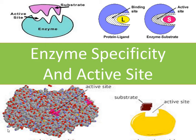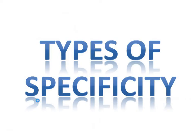Hello friends, warm welcome. In this video that is enzyme specificity and active sites. In nature there will be nothing more specific than the enzyme. The characteristic feature of enzyme is that they are very specific in their action. The specificities are of various types: that may be a group specificity, that may be an absolute specificity, or that may be a stereochemical specificity.